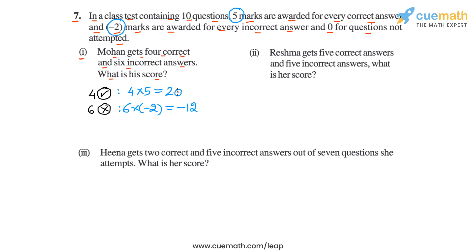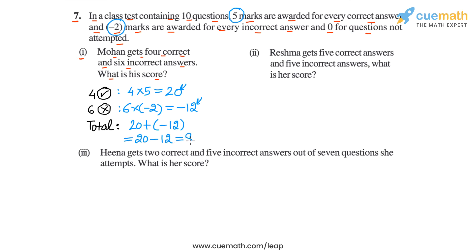How many marks will Mohan get in total? We simply have to add these two scores: 20 and minus 12. Mohan's total score will be 20 plus minus 12, which is equal to 20 minus 12, or 8. So that's Mohan's total score.